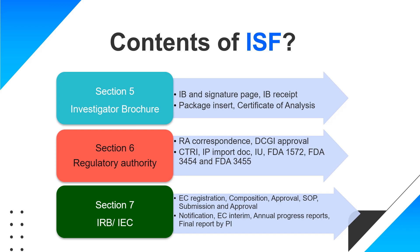Section 7 is dedicated to IRB or IEC documents. All documents regarding the Institutional Ethics Committee or review board are filed here. This starts from the registration of the EC, the composition of the ethics committee, the approval of the EC, the SOPs of the ethics committee, submission and approval letters for this particular clinical trial, all notifications during the clinical trial, and interim or annual progress reports.